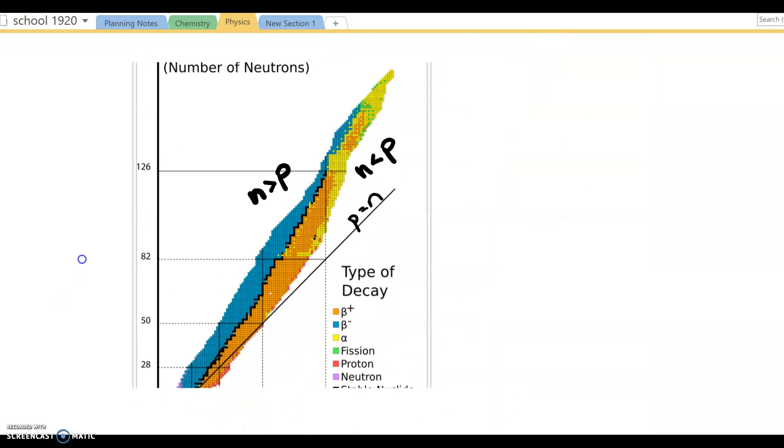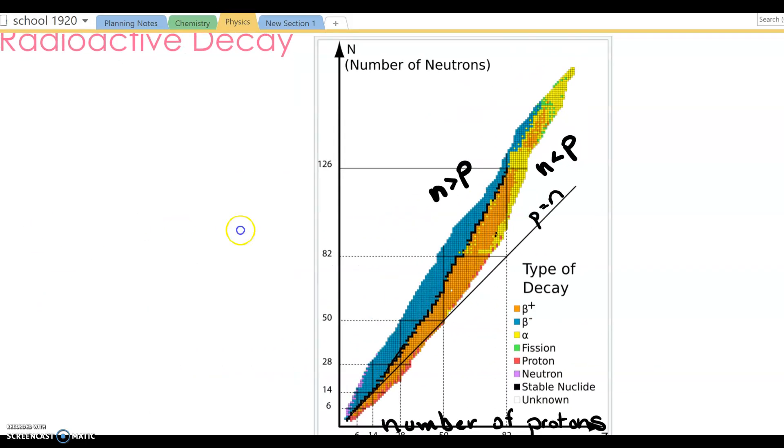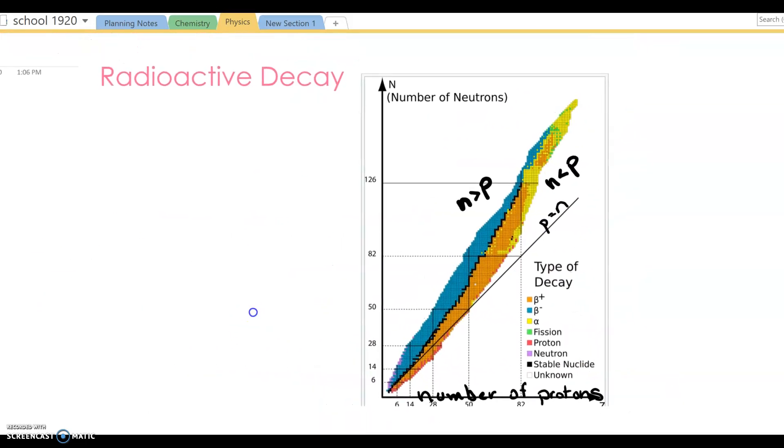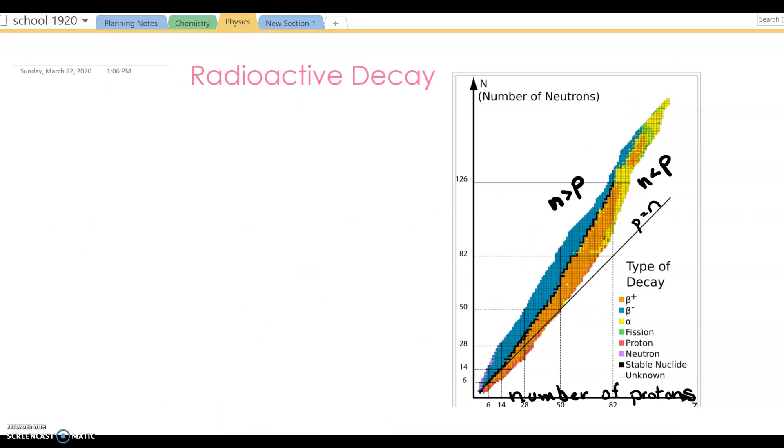I must let you know that this lovely graph was taken from Wikipedia, but it does serve the point of letting you physically see what type of decays are going to happen and why they do to go back and get a balance between the strong nuclear force and electrostatic repulsion between the protons.